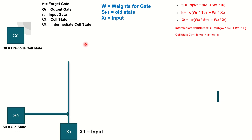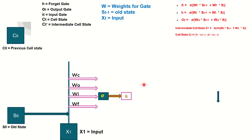In the first step of the graphical walkthrough, we have the previous cell state C0, the old hidden state S0, and the current input X1. The weights available are WC, WO, WI, and WF — for cell state, output, input, and forget gates respectively. The first computation is the input gate IT through the sigmoid function, using the old state S0 and the current input X1 along with the weights WI.